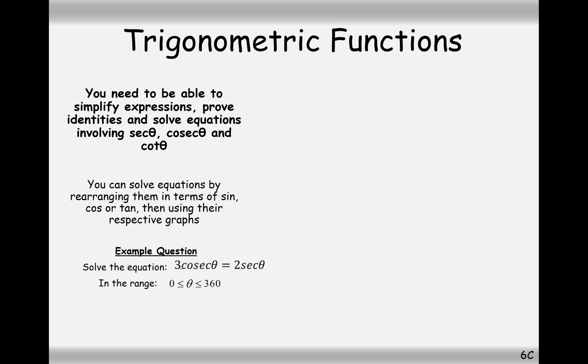A bit more of a tricky one here. Now, 3 cosec theta equals 2 sec theta. So, first, rewrite both of these in terms of sine and cos. And what we're looking for here is sine over cos equals tan. So, it's going to be a tan question, this one. Times both sides by sine. And I would divide by 2 at this point now.